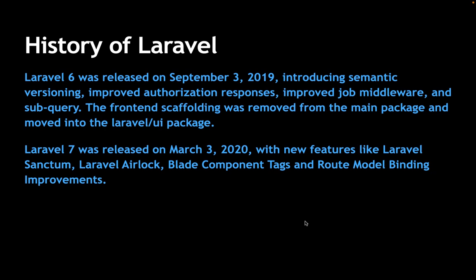Laravel 7 was released on March 3, 2020, with new features including Laravel Sanctum. Laravel Sanctum is similar to Laravel Passport, which we used in the API series for generating tokens for APIs. Laravel Sanctum later became an internal part of Laravel from version 10 onwards. Laravel 7 also included Airlock, Blade component improvements, and route model binding improvements.